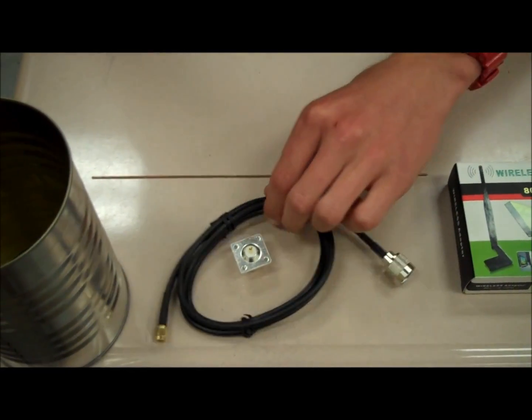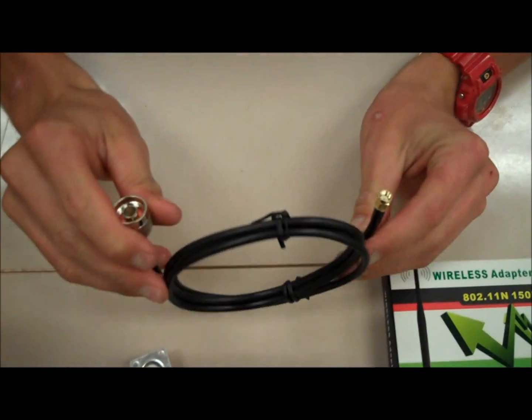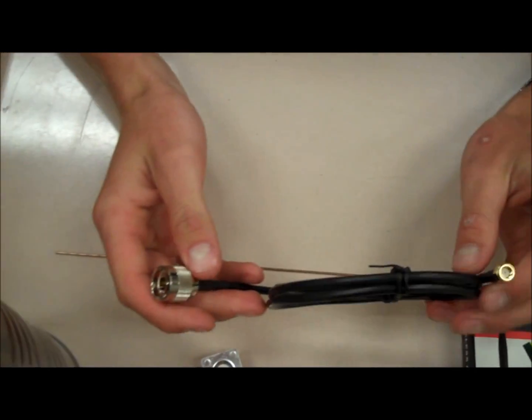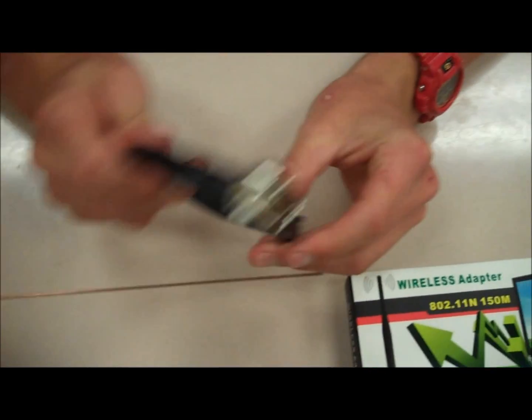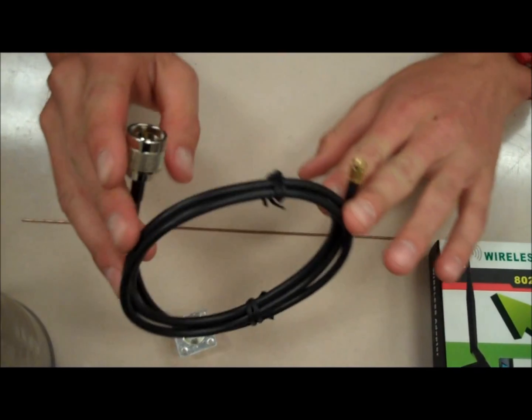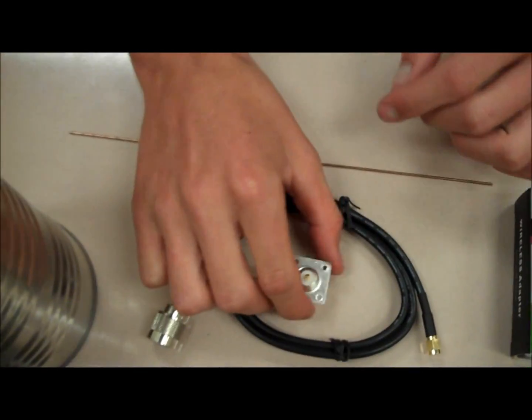The second thing we have is called a pigtail, and what that does is basically a wire that goes from your wireless card to the cantena. This type of pigtail is called an RP-SMA pigtail, and that's just referring to the type of connectors on it. I'll post links in the description where you can get all this.